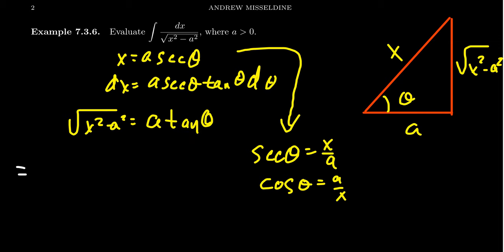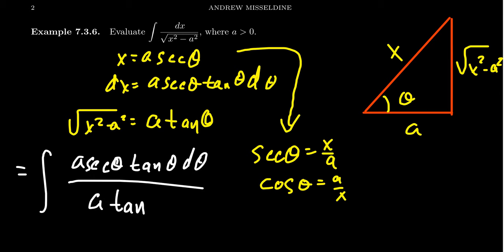So then rewriting the integral in terms of this substitution, the dx becomes a secant theta tangent theta d theta. The denominator just becomes an a tangent theta d theta. You can make some cancellation. The a's cancel, the tangent cancels.